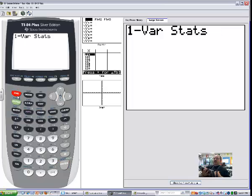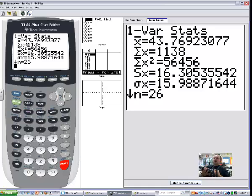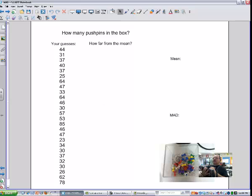I'm going to tell that my data is in list one. So I do second and then L1, because right there, see where the blue. When I hit the blue button, or in your case it's the yellow button, it gets you to all the things that are written in that color. So one variable stats, L1. Boom. What I end up with is that this first number is the mean. X bar is how we pronounce that. The mean is 43.8, just to make our life easier. We got that using the graphing calculator.